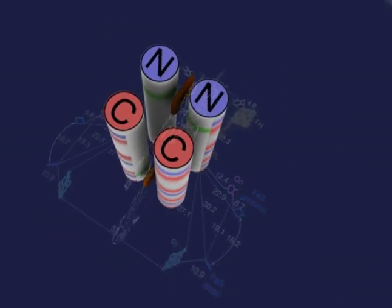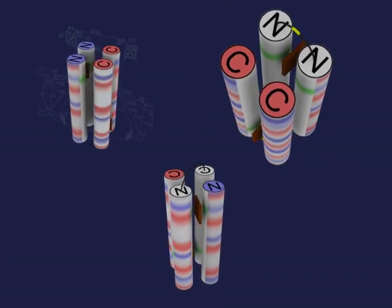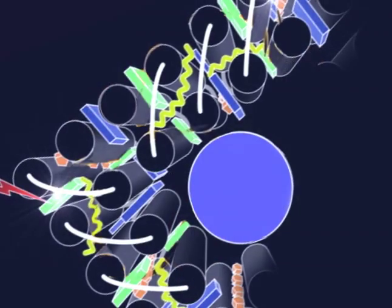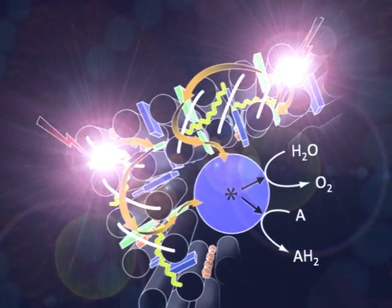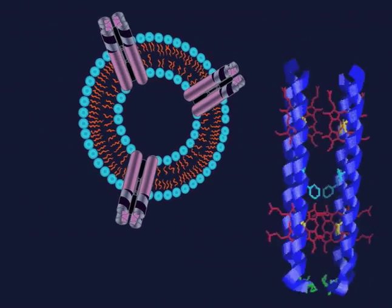Scientists are learning to distill redox proteins down to their key parts in order to build artificial proteins, called maquettes, that can accomplish the same chemical feats. Their hope is that someday maquettes may help us create new ways to harvest energy, or perhaps replace proteins in the human body that are not functioning properly.